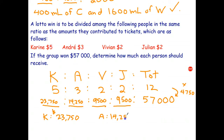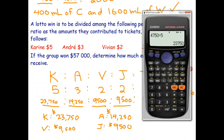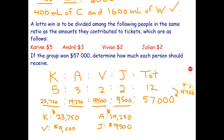So Katrina gets $23,750, Andre gets $14,250, Vivian gets $9,500, and Julian also gets $9,500. Let's do a quick check: 23,750 plus 14,250 plus 9,500 plus 9,500 comes to $57,000. That is our answer. We'll leave it at that and move on to our last section of ratio and rates, which is rates.